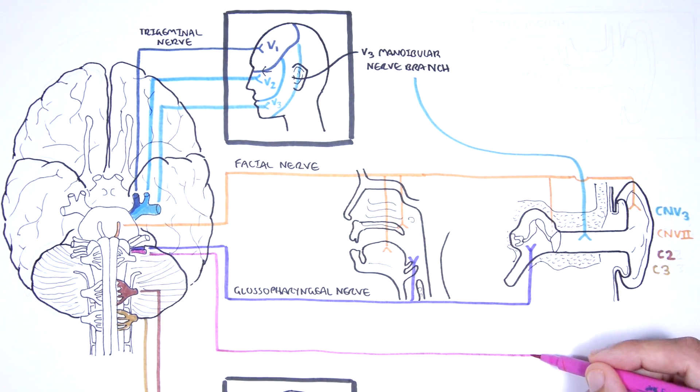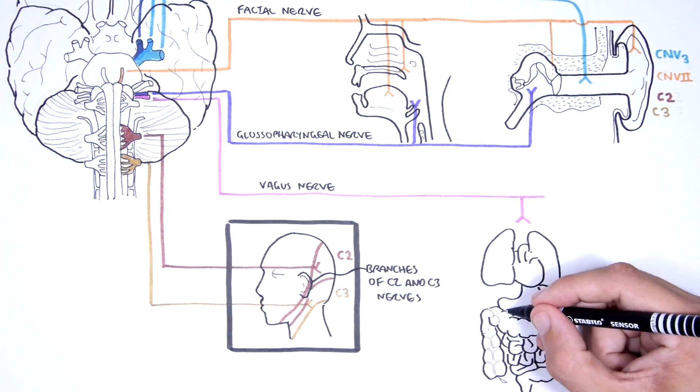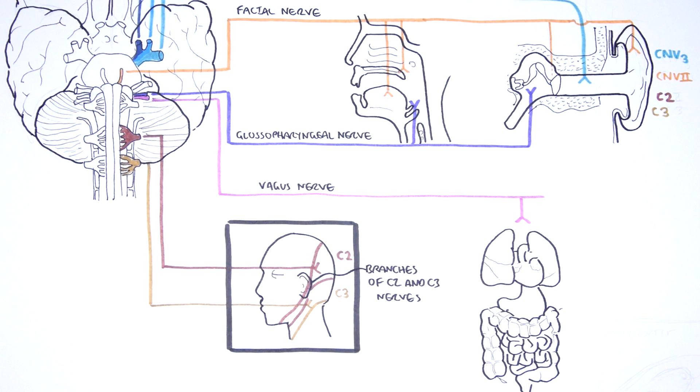The vagus nerve, which is cranial nerve number 10, is an important nerve known for its parasympathetic function. It innervates many organs in our body, including the heart, the lungs, the digestive tract.